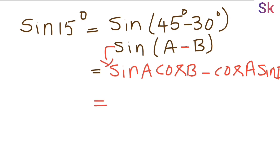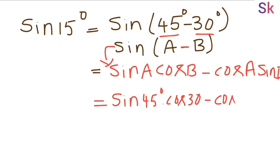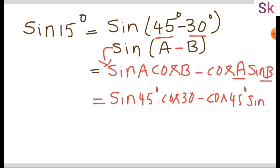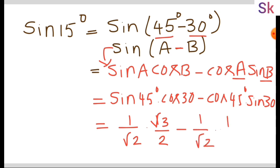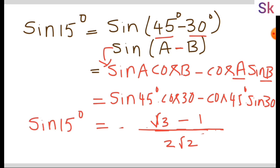Now substitute the A and B values. Our A value is 45 and B value is 30. So we get sin 45 times cos 30 minus cos 45 times sin 30. Sin 45 is 1/√2, cos 30 is √3/2, cos 45 is 1/√2, and sin 30 is 1/2. In the denominator we have 2√2.